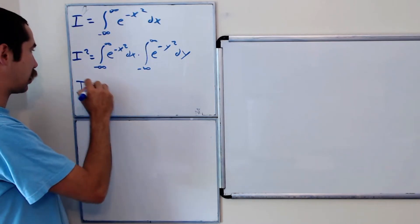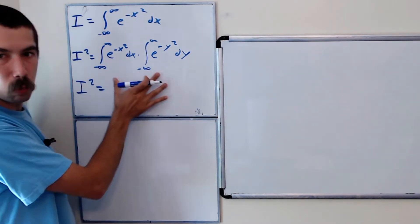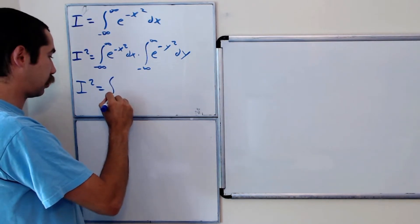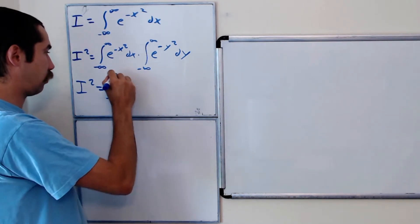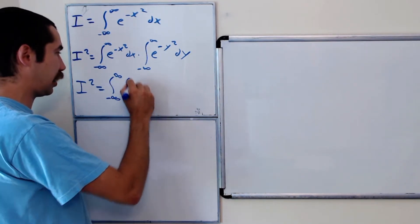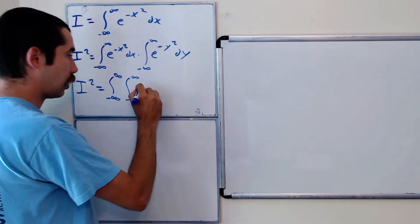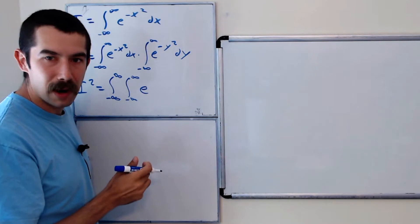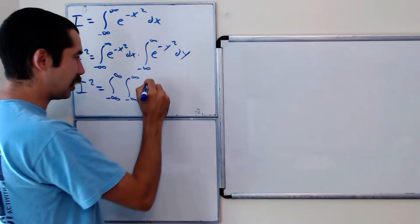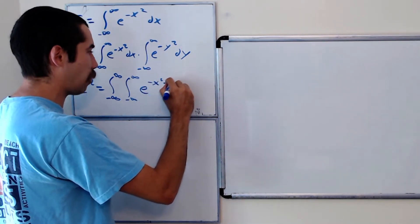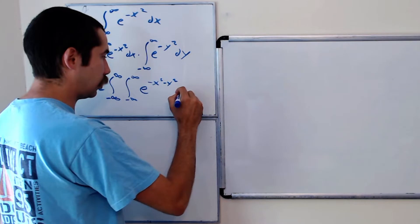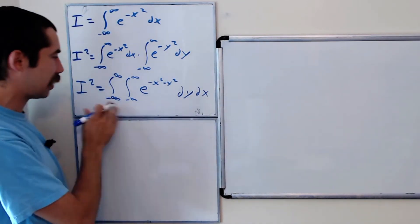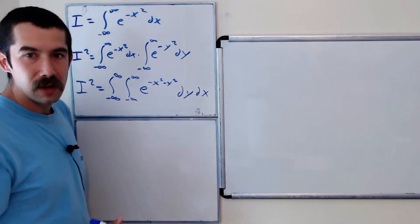Using properties of double integrals, we can write this as one big double integral: the integral from negative infinity to infinity of the integral from negative infinity to infinity of e to the negative x squared minus y squared. We'll pick an order of integration — dy dx — and it doesn't really matter since the bounds are the same.